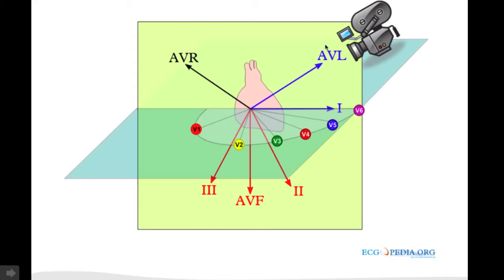Like lead 1 and AVL are looking from the left to the heart. Lead 2, 3, and AVF are the inferior leads, looking from below to the inferior parts of the heart.